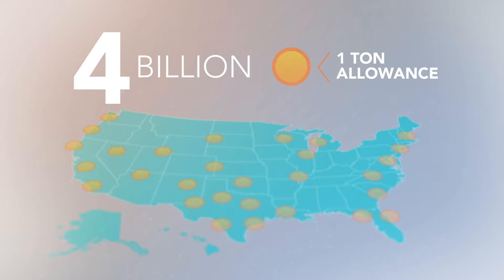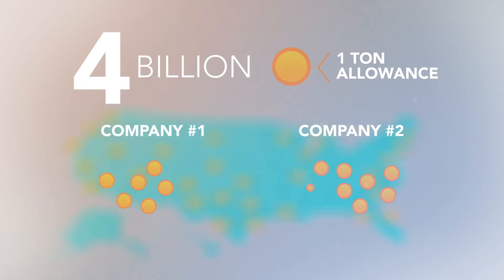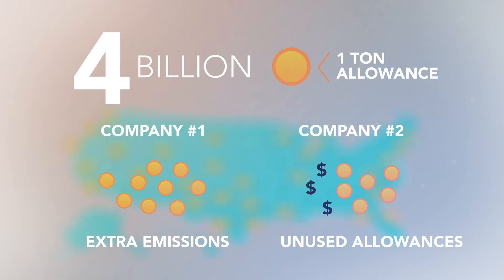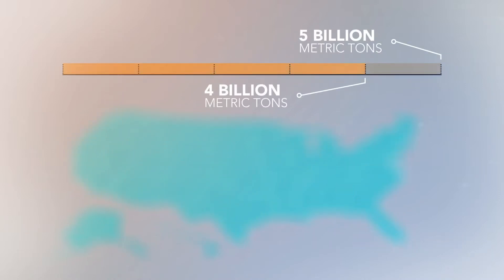A carbon market is then created for these allowances, where producers who over-emit can buy additional allowances from producers who are able to more easily reduce their emissions. The key advantage here is that producers who can reduce pollution most easily will do so, and can sell their permits to others who are not able to reduce emissions so quickly or easily. Cap-and-trade can also provide a controlled pathway for reducing total greenhouse gas emissions, because the cap can be slowly reduced over time.